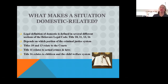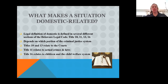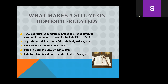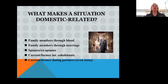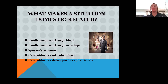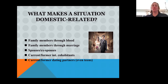So what makes a situation domestic-related? In Titles 10, 11, 13, and 16, it's going to tell you what is domestic-related. What's important to know is it's going to be family members through blood or marriage, spouses, ex-spouses — so that divorced couple can still have a domestic even though they're technically not married anymore — current and former intimate partners, current and former dating partners, even teens. That's important because we didn't always look at teens as being involved in a domestic incident. Teens can actually file for a protection from abuse order in family court now.